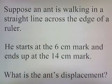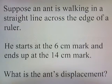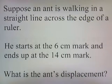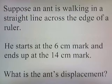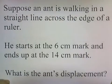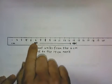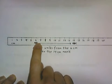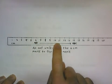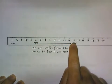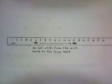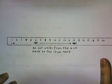Suppose an ant is walking in a straight line across the edge of a ruler. He starts at the 6cm mark and ends up at the 14cm mark. What is the ant's displacement? Here's a picture: we have an ant at the 6cm mark and he walks in a straight line until he reaches the 14cm mark.